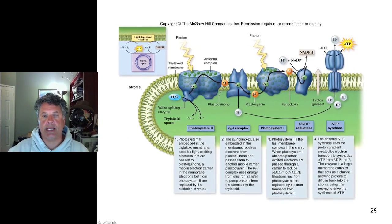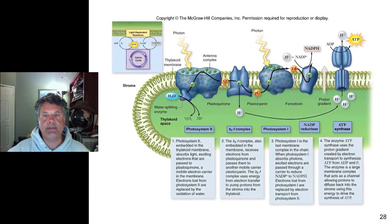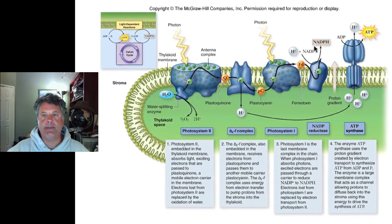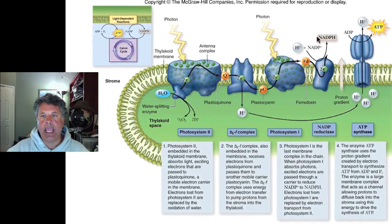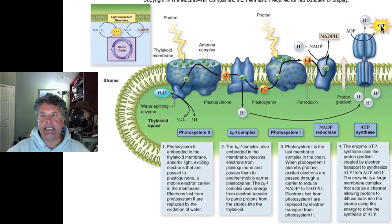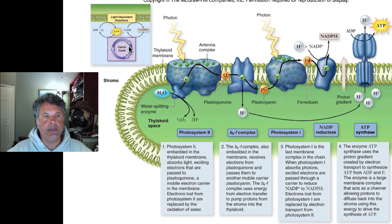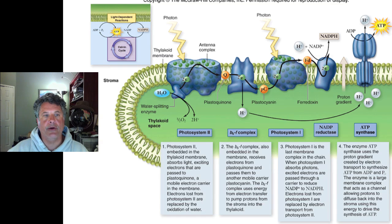Here's a schematic of the whole process. The goal is to produce two types of molecules: NADPH, an electron carrier, and ATP. Those two molecules, produced by the light-dependent reactions in the thylakoid membrane, will be used to drive the Calvin cycle, which involves the fixation of carbon from carbon dioxide into organic molecules — carbohydrates that are the food sustaining all life on Earth.